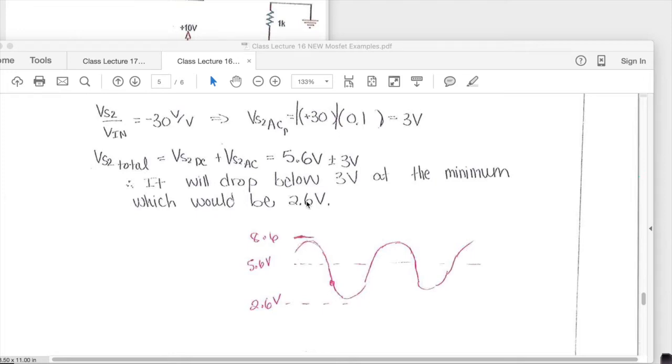It's going to be centered around the 5.6 and then it's going to go up by 3 and down by 3. So it's going to go up to 8.6 and down to 2.6 and so it will oscillate around there. So in this case it will drop below 3 volts at the minimum, which is right because it will go all the way down to 2.6 volts. So yes, the answer is yes for this one. Yes, it does drop below 3 volts. Thanks for watching.